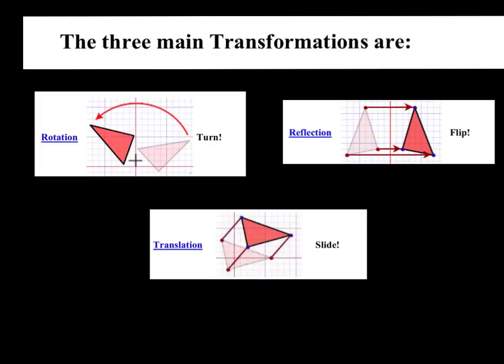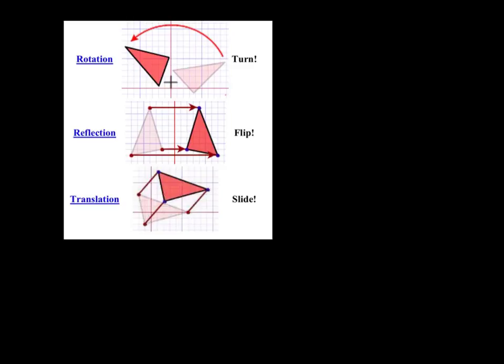We are going to be learning about transformations. The three main transformations are rotation, reflection, and translation. They all differ. Rotation turns, reflection flips, and translation slides. When you look at all three of these, what can you tell me?